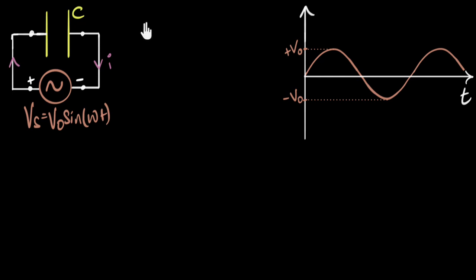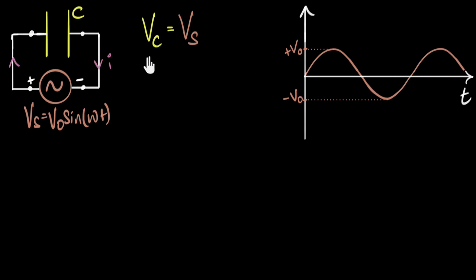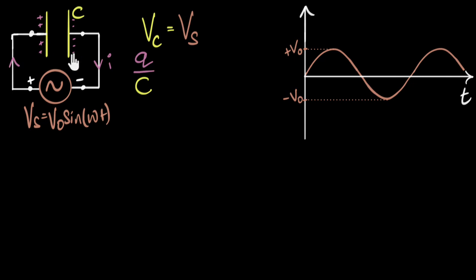At any moment in time, the voltage across the capacitor should equal the source voltage. Now, how do we figure out the voltage across the capacitor? From the capacitor equation, the voltage across the capacitor is just the charge on the capacitor divided by the capacitance. This is the definition of capacitance — charge by capacitance. This is basically saying that to generate a voltage, the capacitor must get charged, so there must be some charge Q, and because of that charge, there is a potential difference. That voltage equals the generator voltage, which is V₀ sin(ωt).